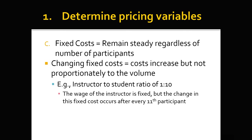Then there are fixed costs — costs that remain steady regardless of how many participants you have. There are also changing fixed costs: costs that increase but not proportionally to volume. For example, for an instructor-to-student ratio of one instructor per 10 students, the instructor's wage is fixed. But the change in fixed costs occurs after the 11th person, because as soon as you have 11 participants, you need two instructors. Other fixed costs include facility rental and field maintenance — things you have to pay regardless of whether you have one person or 120.